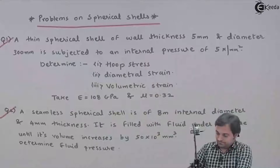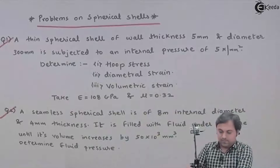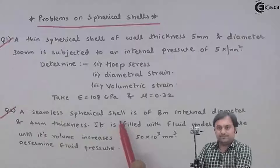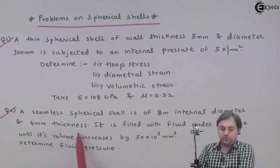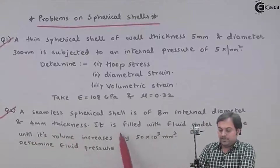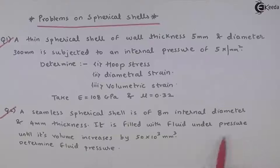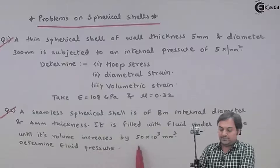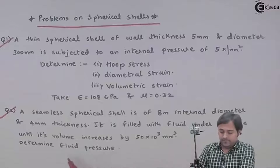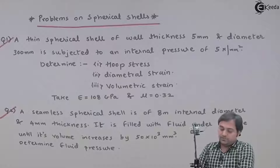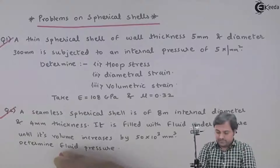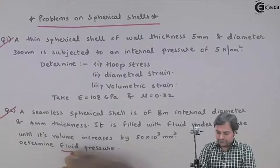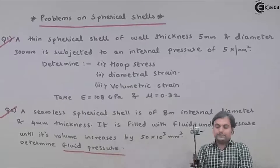A seamless spherical shell is of 8 meter internal diameter and 4 mm thickness. It is filled with fluid under pressure until its volume increases by 50×10³ mm³. Determine the fluid pressure. This question asks us to find the fluid pressure inside the spherical vessel.